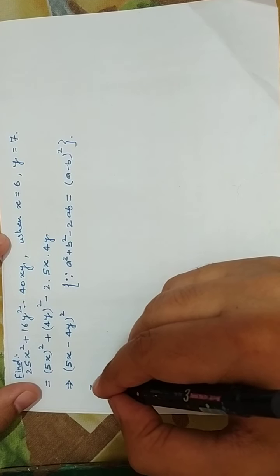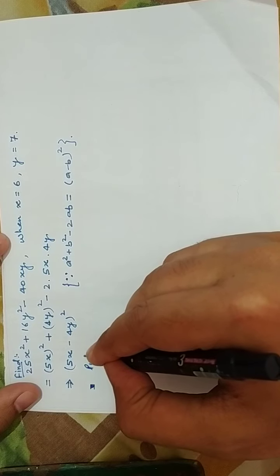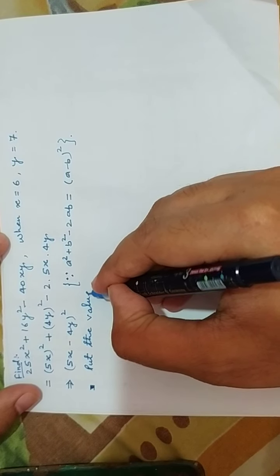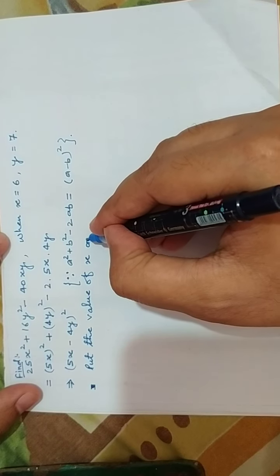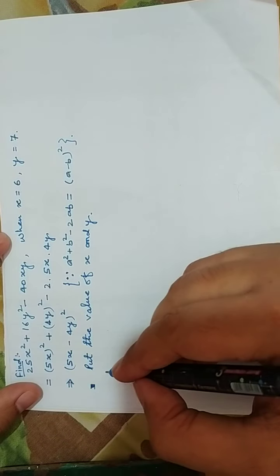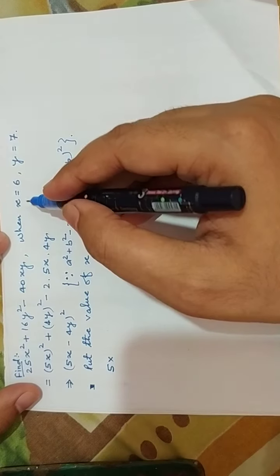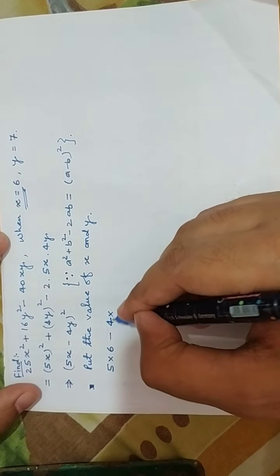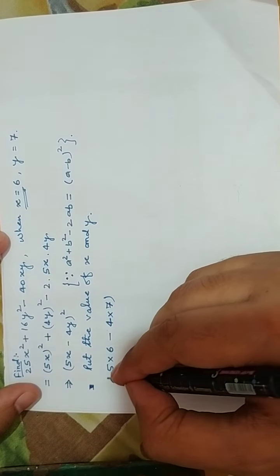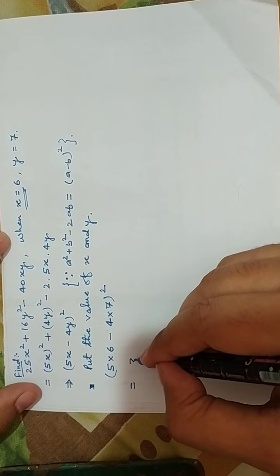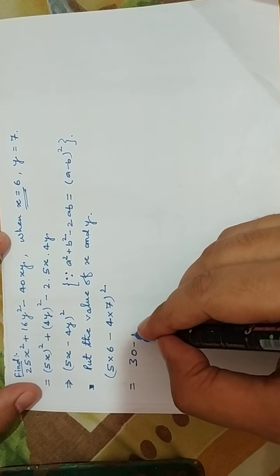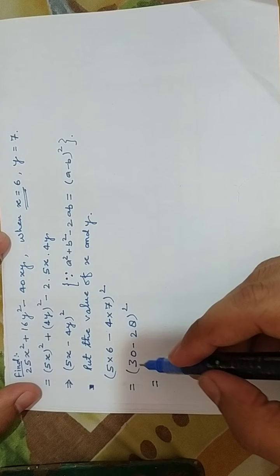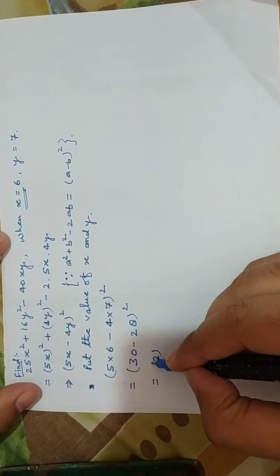Now put the values of x and y. So 5 into x — x is 6 — minus 4 into y — y is 7 — whole square. So 5 × 6 = 30, and 4 × 7 = 28, whole square. It equals (30 − 28)².